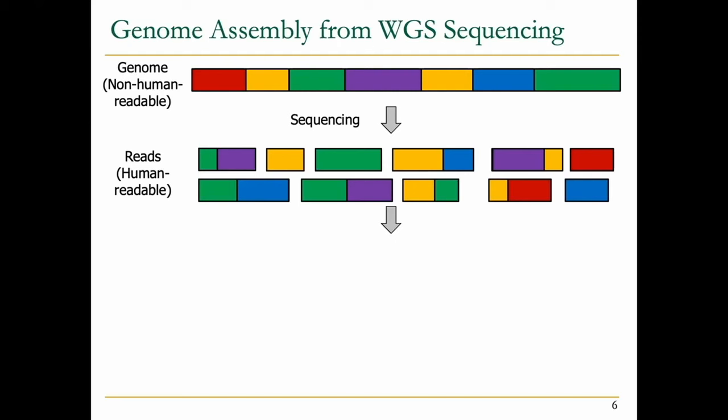Our genome is in a non-human readable form — we take the DNA but it's not directly analyzable. Our goal is to follow certain steps so we can convert it into a human-readable form, constructing the entire genome hopefully in full, completely accurate, and fully representing our own genome. There are several steps to achieve that. It starts with sequencing, which generates reads — fragments of the genome in human-readable form — but we don't know the order of these reads or where they belong.